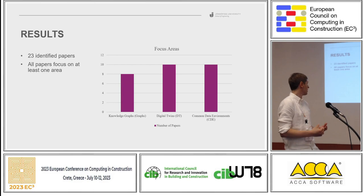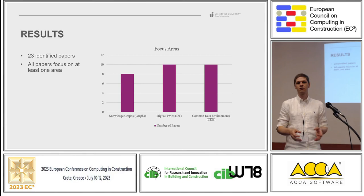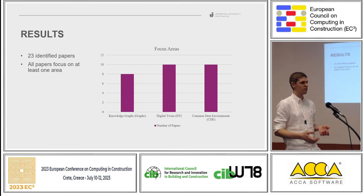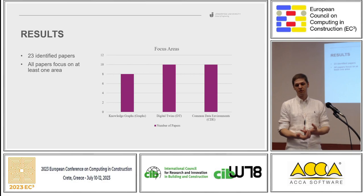From these papers, we tried to classify them into different subject areas. The three main areas that all the papers fit into — some fitting into more than one — are knowledge graphs, digital twins, and common data environments.